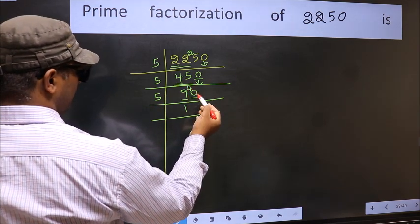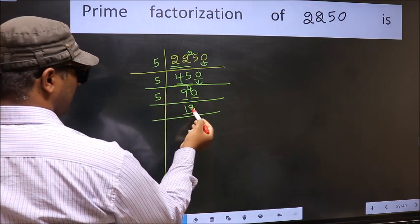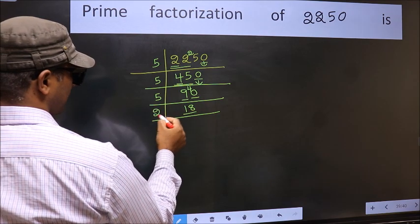4 carried forward 40. When do we get 40 in 5 table? 5 eights 40. Now here we have 18. 18 is 2 nines 18.